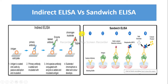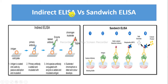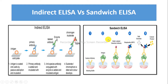Now we will see the difference between Indirect ELISA and Sandwich ELISA. ELISA is enzyme linked immunosorbent assay. In Indirect ELISA, the microtiter plate is coated with sample proteins, whereas in Sandwich ELISA, the microtiter plate is coated with primary antibody.